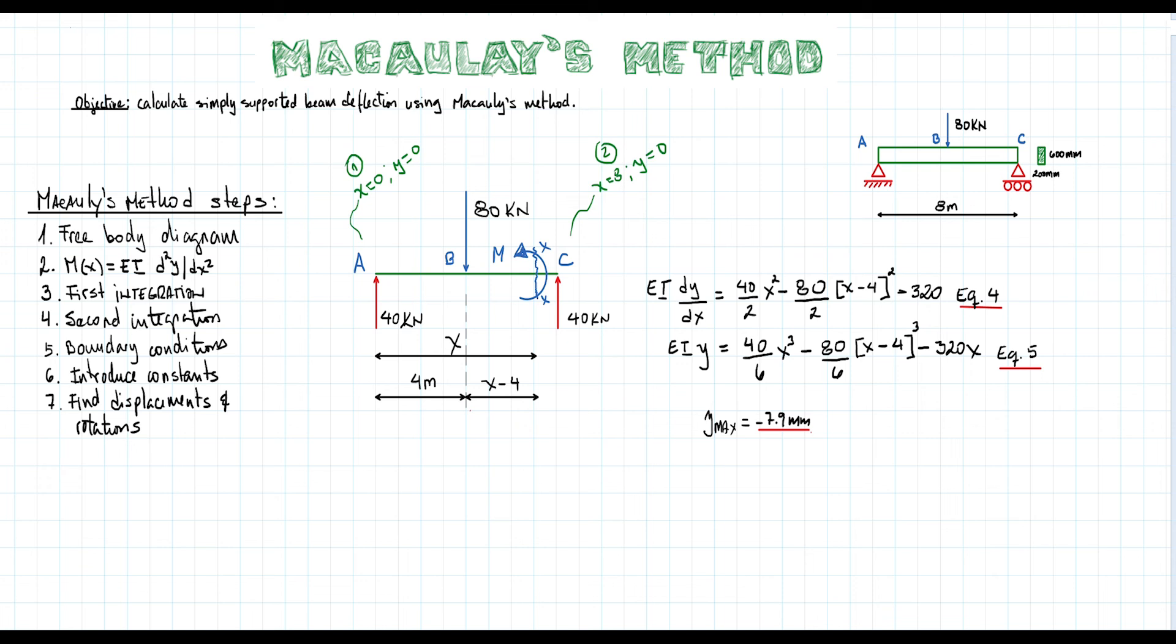Also, it is important to know where are the maximum rotations found at support locations. Let's take as an example the support located at point A. Using equation 4, we get that the rotation at A is equal to minus 0.003 radians. And negative sign, in this case, indicates a clockwise rotation.